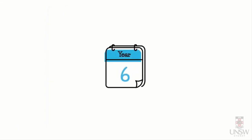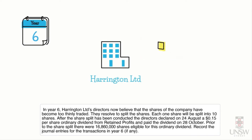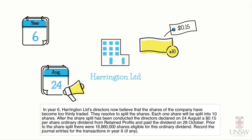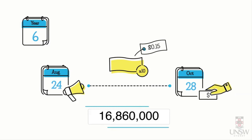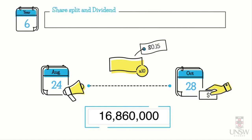In year six, Harrington Limited's directors believe the company's shares have become too thinly traded, so they resolve to split the shares — each share will be split into 10 shares. After the share split, the directors declare on the 24th of August a $0.15 ordinary dividend from retained profits, to be paid on the 28th of October. Prior to the split, there were 16,860,000 shares eligible for the dividend.